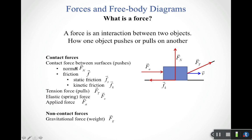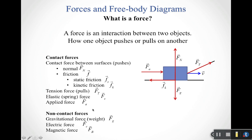With contact forces, you can see the objects in contact, the rope, the spring, or the person pushing. But gravitational force is a non-contact force — I need two objects interacting, and in this case it's the interaction between the box and the Earth. The Earth is often unseen in a free body diagram. The gravitational force pulls the box straight down.